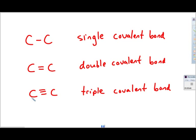The maximum number of bonds that one atom can form with another is a triple bond. Each atom shares three electrons with the other. And so here in a triple bond, they're sharing a total of six electrons or three pairs with each other.